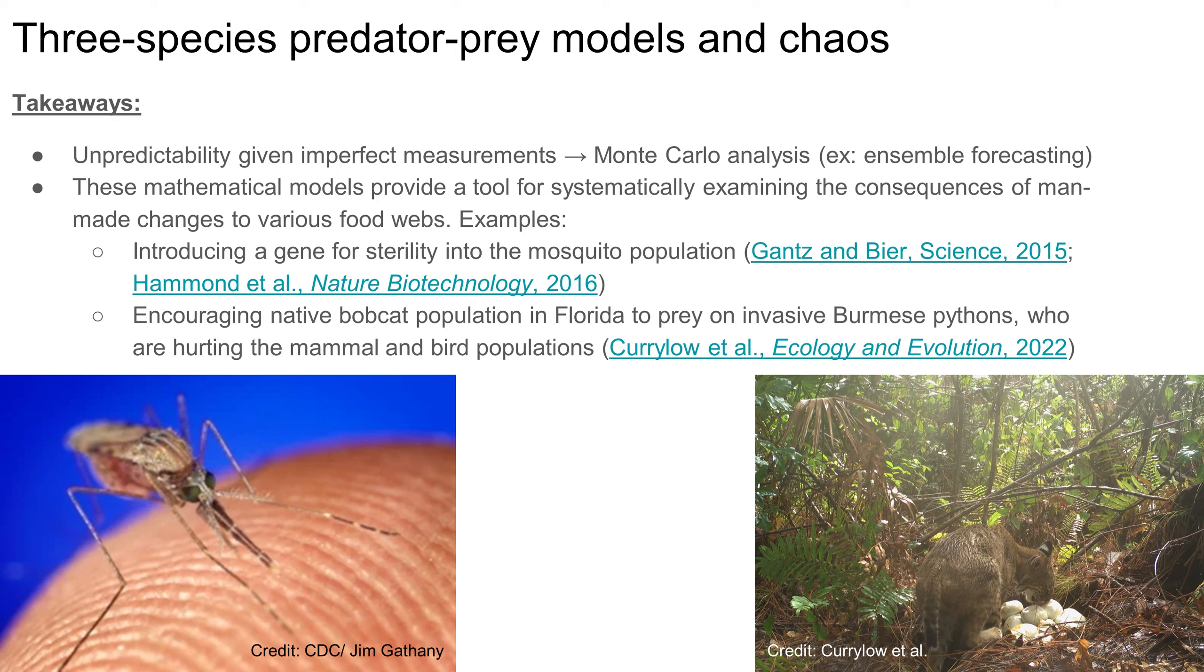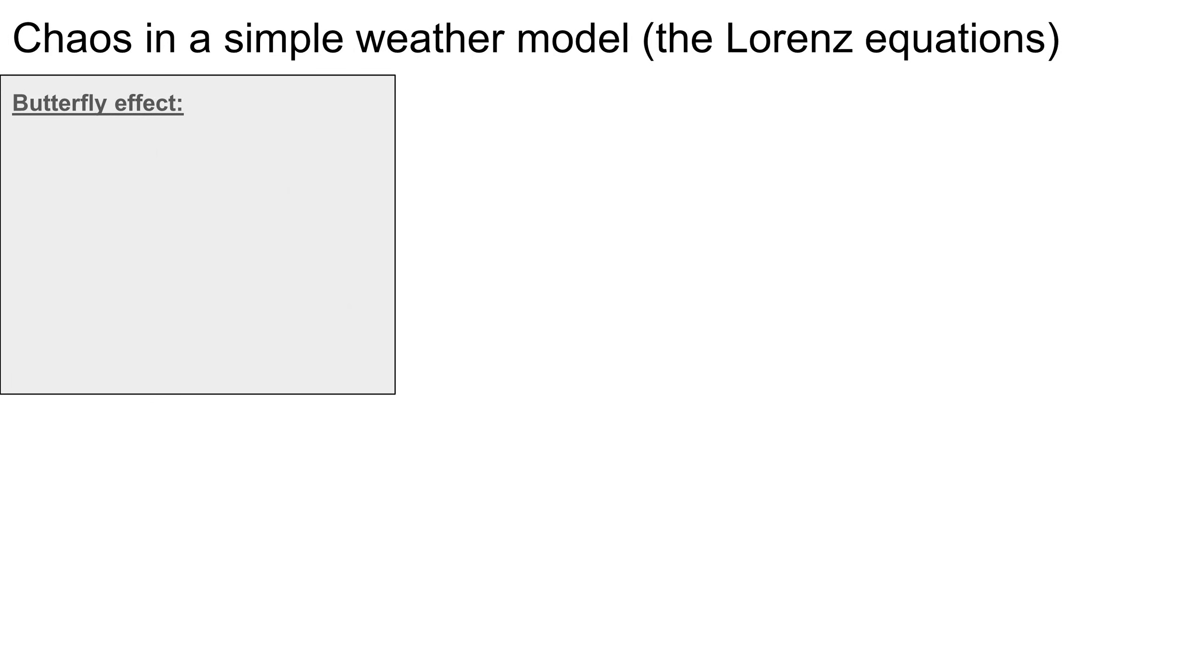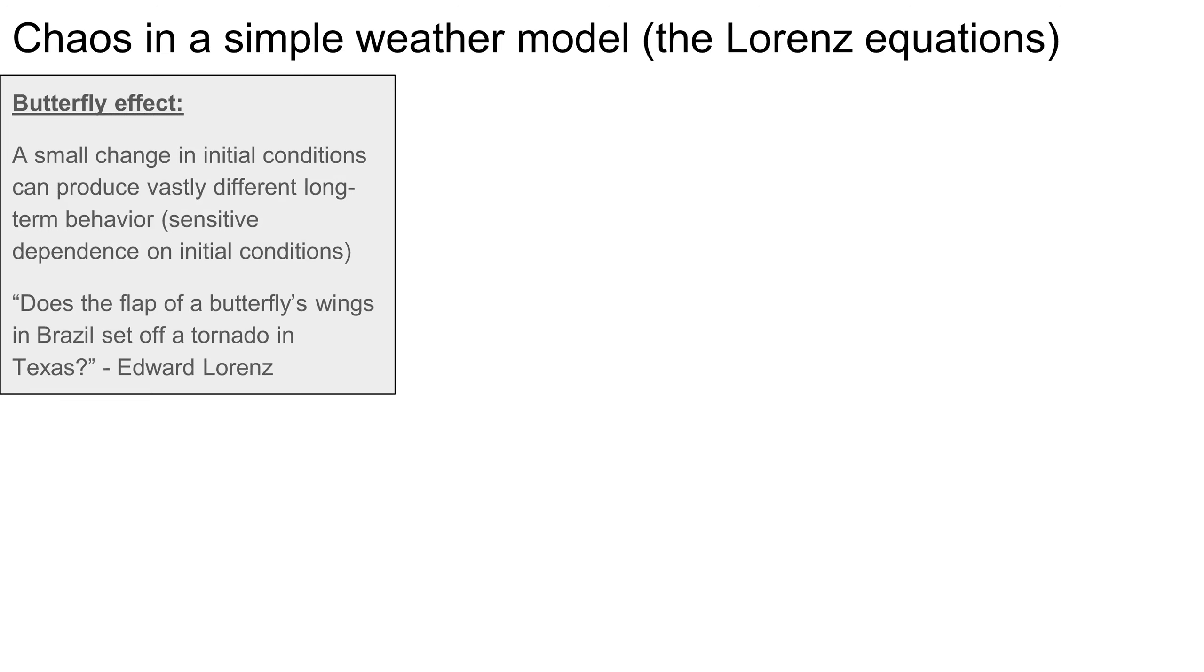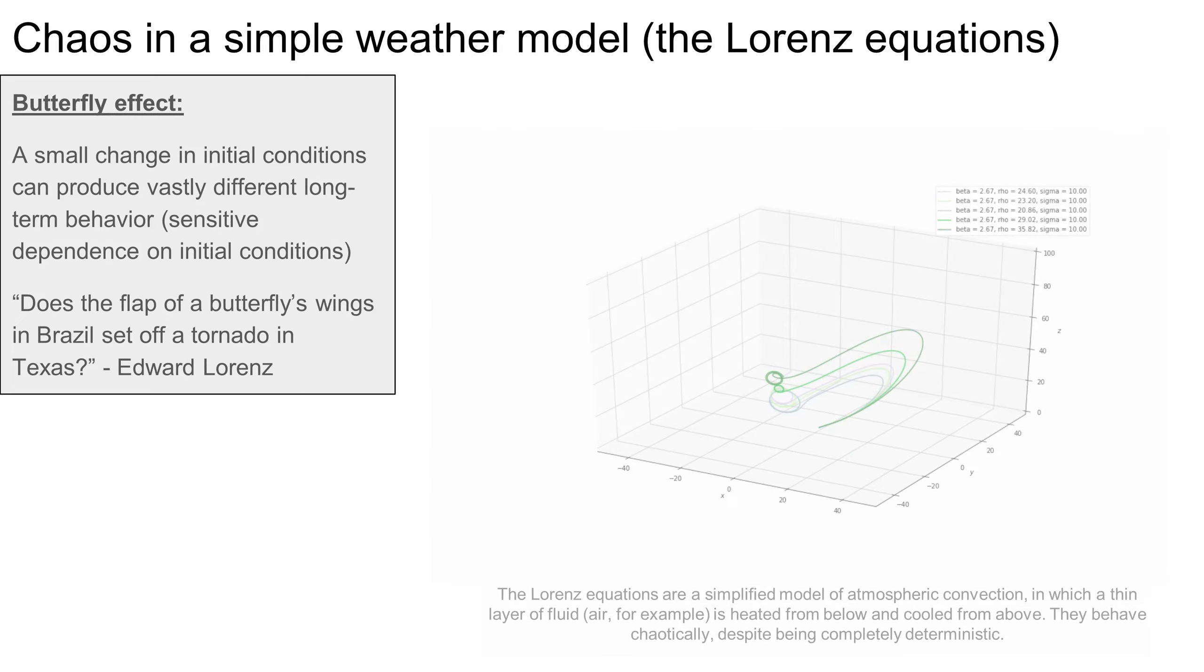That about wraps it up for our discussion of mathematical ecology. At the beginning of this video, I promised we'd talk about the butterfly effect, and now it's finally time to do just that. We've actually seen the butterfly effect already in this video. It's just a nickname for extreme sensitivity to initial conditions, one of the hallmarks of chaos. The name comes from a rhetorical question. Does the flap of a butterfly's wings in Brazil set off a tornado in Texas? This was the title of a talk about chaos given by Edward Lorenz, a meteorologist and mathematician who discovered chaotic behavior in a simplified weather model, in which the atmosphere is represented as a thin layer of fluid that is heated from below and cooled from above.